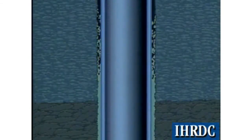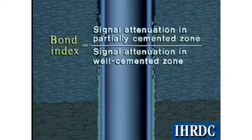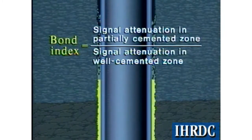If a partially cemented section of casing produces an amplitude higher than the minimum amplitude measured in a well-cemented zone, a hydraulic seal may or may not exist. The bond index can help in this regard. The bond index is defined as the signal attenuation in the zone of interest, divided by the attenuation in a zone with known good cementation.